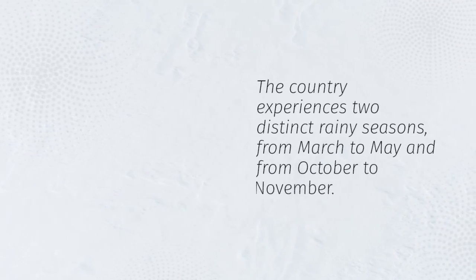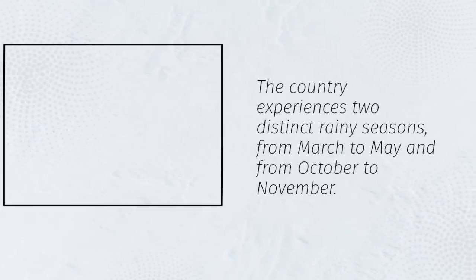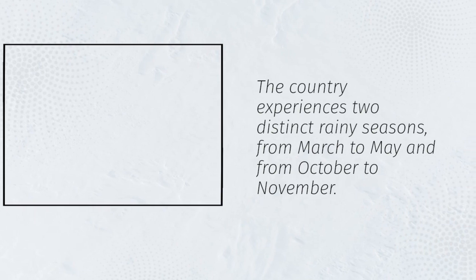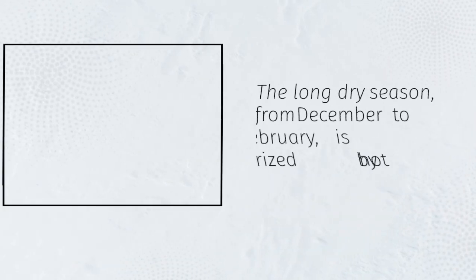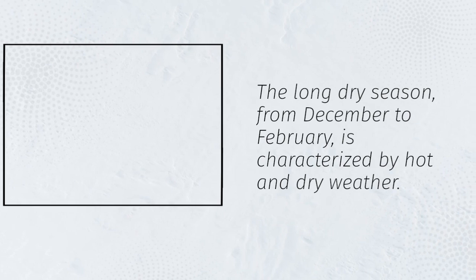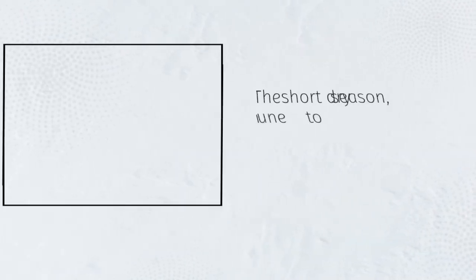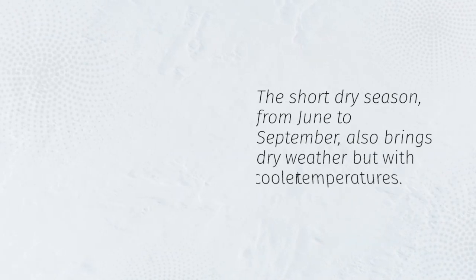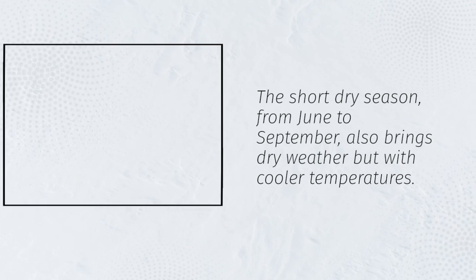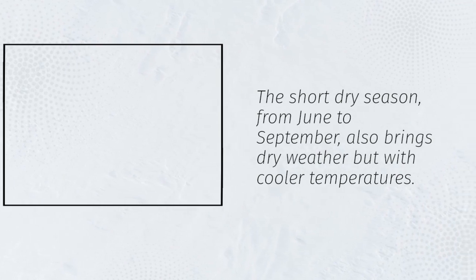The country experiences two distinct rainy seasons, from March to May and from October to November. The long dry season, from December to February, is characterized by hot and dry weather. The short dry season, from June to September, also brings dry weather but with cooler temperatures.